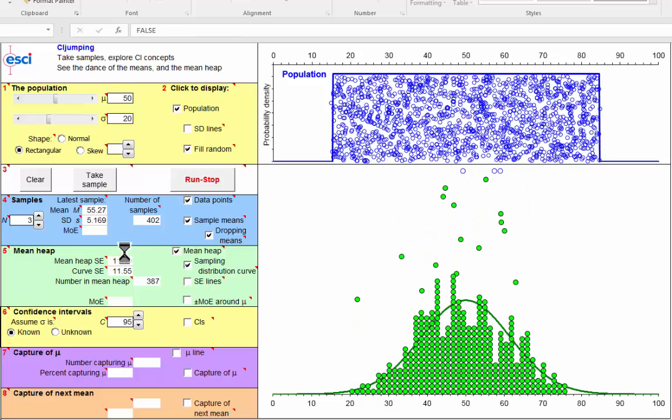We've now taken 400 samples, each of size n equals 3. And our theoretical sampling curve still looks to fit really very well the empirical mean heap, this pile of green dots.